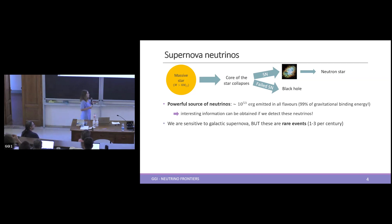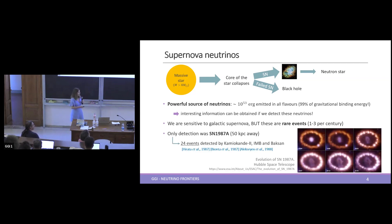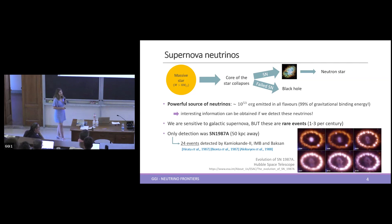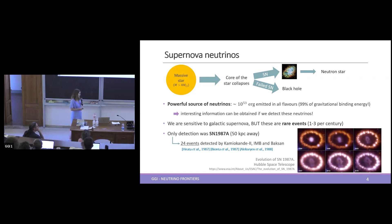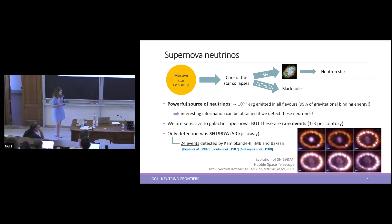We are only sensitive to galactic supernovae, and these are very rare events — about one to three per century. There has only been one detection of supernova neutrinos: supernova 1987A, located 50 kiloparsecs away in a satellite galaxy. Only 24 events were detected by Kamiokande II, IMB, and Baksan. If we had a supernova nowadays, we would be able to detect many more events than they did back then.